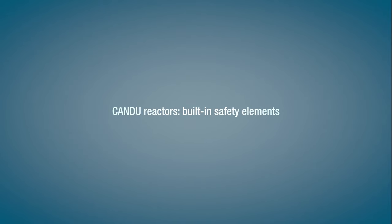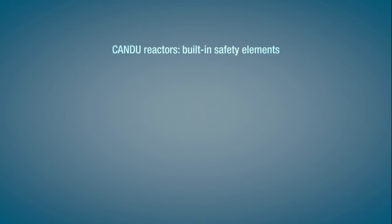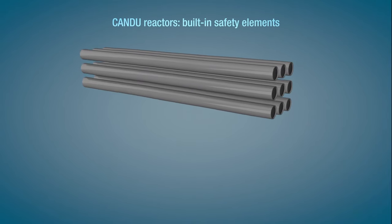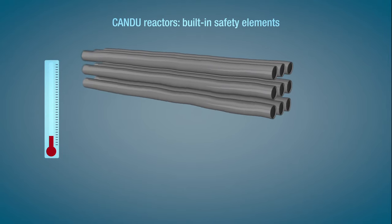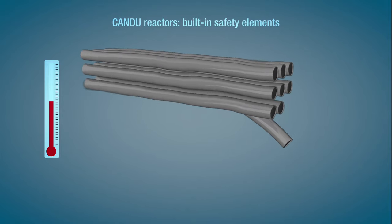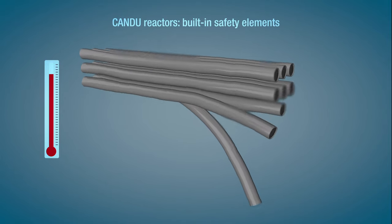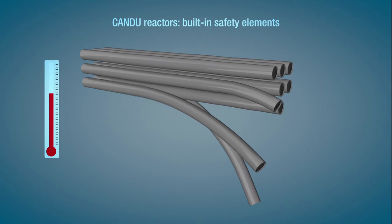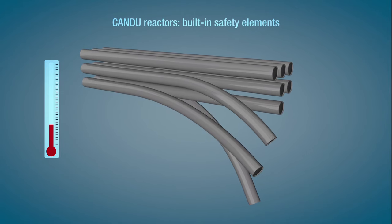CANDU reactors also have many automated safety elements built in. The fuel channels themselves can only maintain the nuclear reaction process if they are mechanically sound. Should temperatures start to increase abnormally, these fuel channels will start to deform and bend due to gravity, instantly reducing the efficiency of the reaction and cooling the reactor.